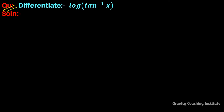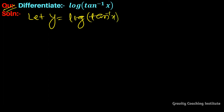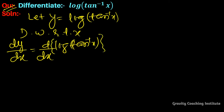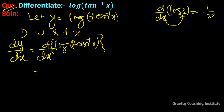Differentiate log(tan inverse x). Let y equal to log(tan inverse x). Differentiating with respect to x, dy upon dx equals the derivative of log(tan inverse x). We can use the log derivative formula — 1 upon x — since the inner and outer functions are distinct, so we apply the chain rule.